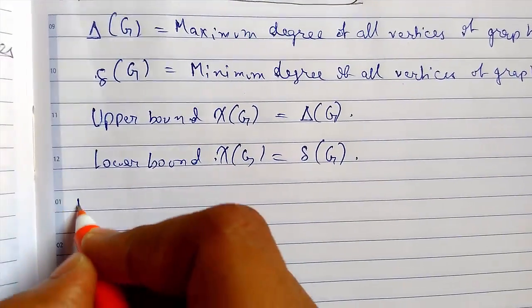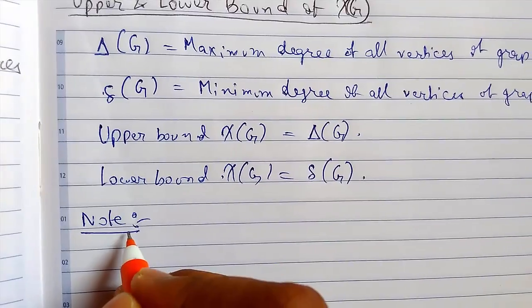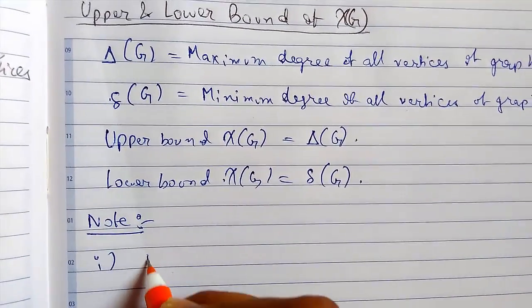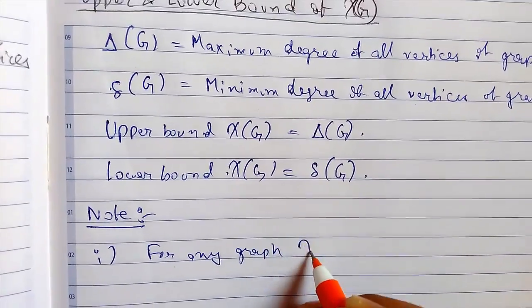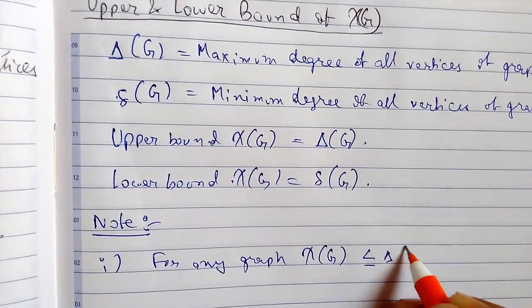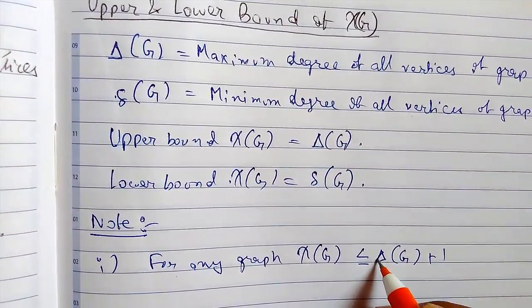Now there are some properties so you can note it. For number one, for any graph, χ(G) is always less than the upper bound plus one.